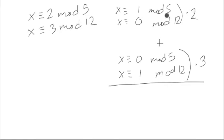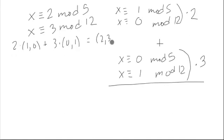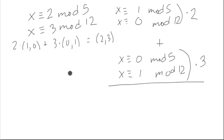Notice if we multiply 2 to the vector (1, 0) — think of it as an ordered pair or as a vector — 2 times (1, 0), and we add it to 3 times (0, 1), we end up getting (2, 3). So we actually get that this solution map, or the solution function that goes from ordered pairs in these mods to the actual solution itself, is a module map, meaning it preserves structure: addition and outside multiplication. Which is really, really nice.